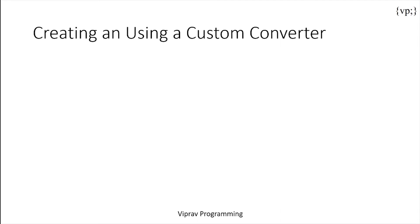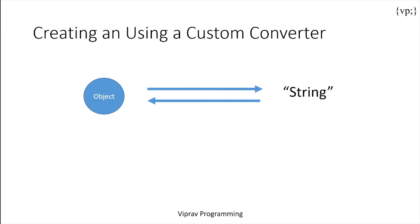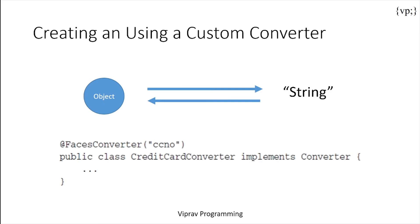A JSF converter class converts objects to strings and vice versa when needed. A custom converter must at minimum be able to convert data both ways. You can use the @FacesConverter annotation with its own name and create a converter to convert from an object to a string or a string to an object.